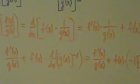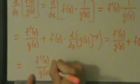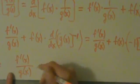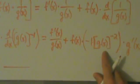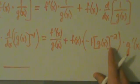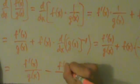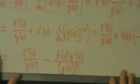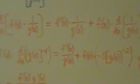Now let's simplify. This equals f'(x)/g(x), and then — because we have a negative one — the plus becomes a minus. So we get minus f(x) times g'(x) divided by g(x) squared. Remember, g(x)^(-2) is the same as 1/g(x)^2, just as negative one times x^(-2) is negative one over x squared. So the whole expression simplifies to f'(x)/g(x) minus f(x)·g'(x)/g(x)².